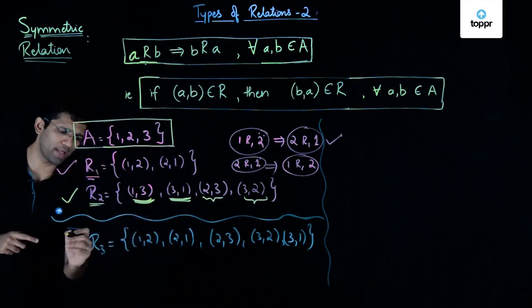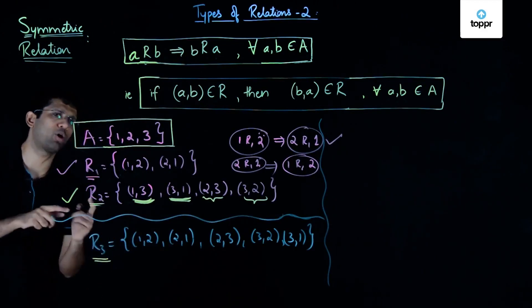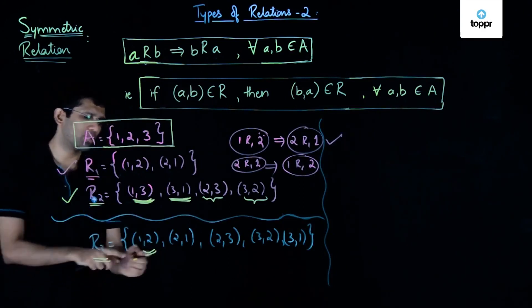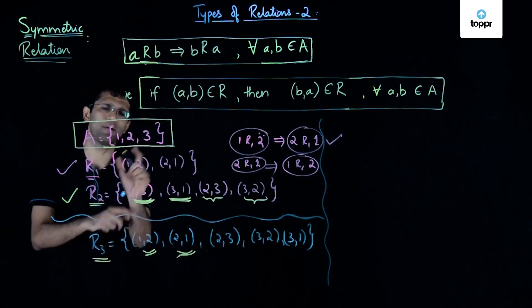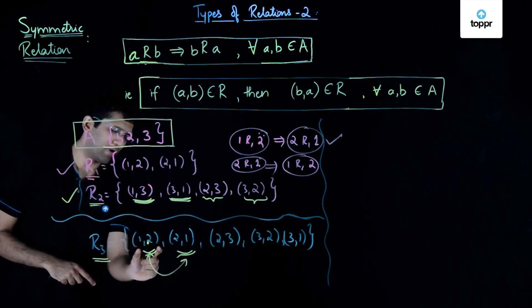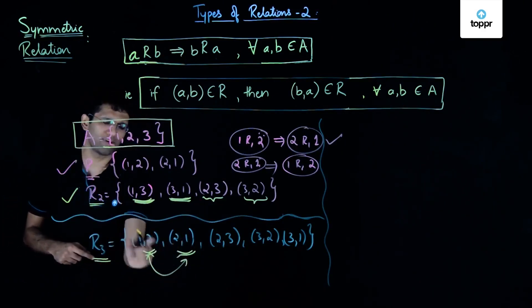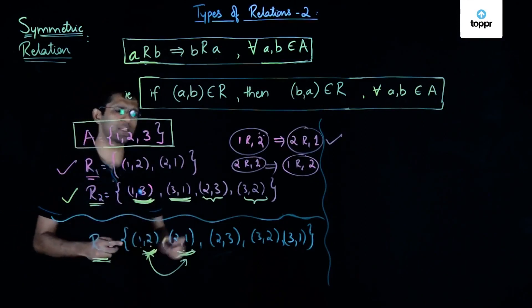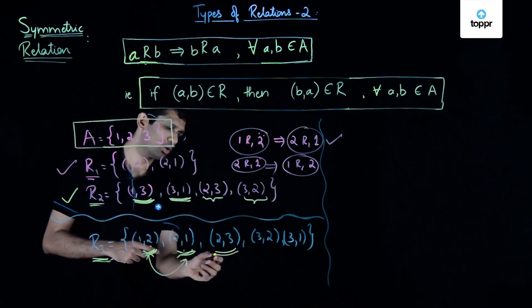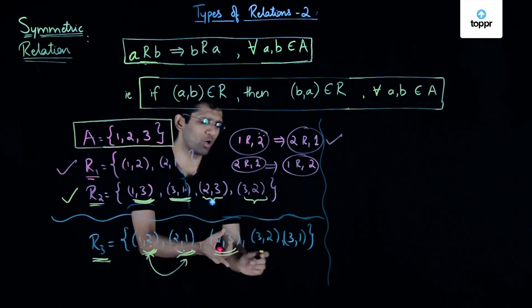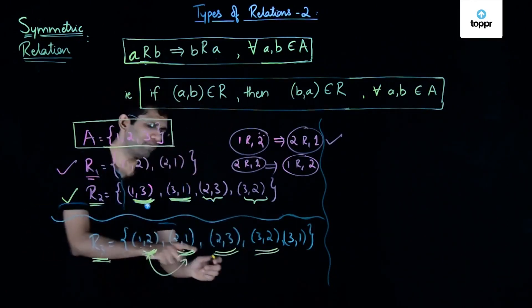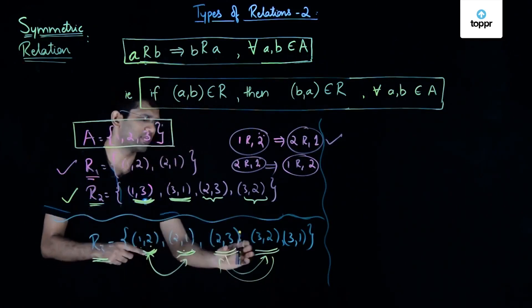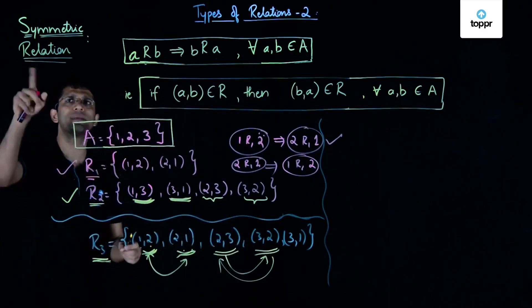Now let us determine if R3 is a symmetric relation on set A. R3 contains the ordered pair (1, 2), and it also contains (2, 1). So with respect to elements 1 and 2, (1, 2) implies (2, 1) and (2, 1) implies (1, 2). These first two ordered pairs do satisfy the condition for R3 to be symmetric. Moving to the next ordered pair (2, 3): R3 also has (3, 2), so (2, 3) implies (3, 2) and (3, 2) implies (2, 3). For these two ordered pairs as well, R3 is symmetric.